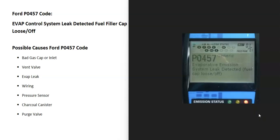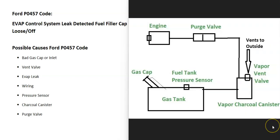Today I'm talking about a Ford with the P0457 code — what it is and how you go about fixing it. A Ford P0457 code is an EVAP control system leak detected, fuel filler cap loose or off. Modern vehicles have what's called an EVAP system that basically takes all the gas vapors from the gas tank and feeds them back up to the engine to get burnt off.